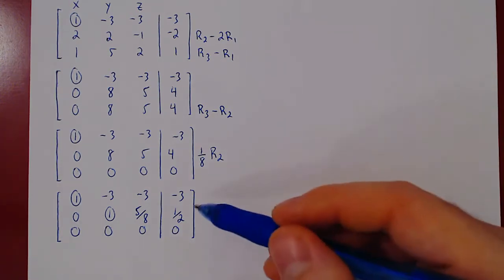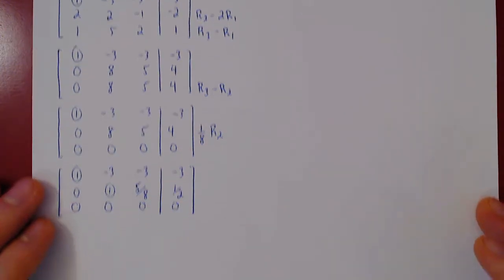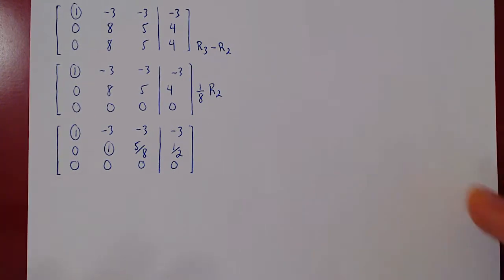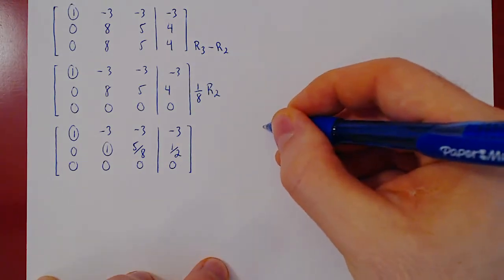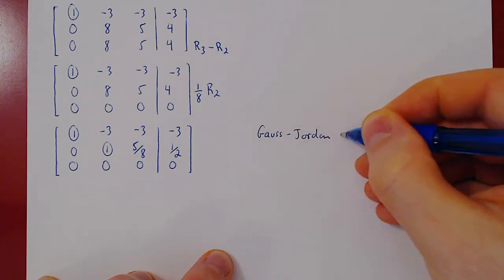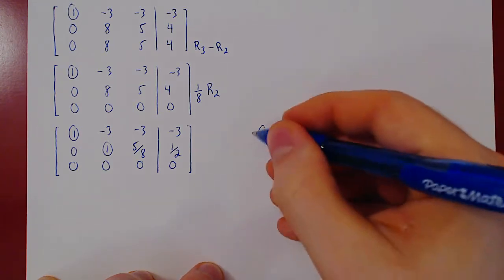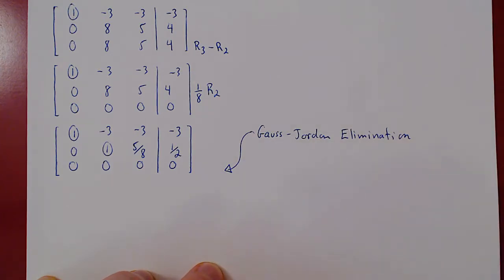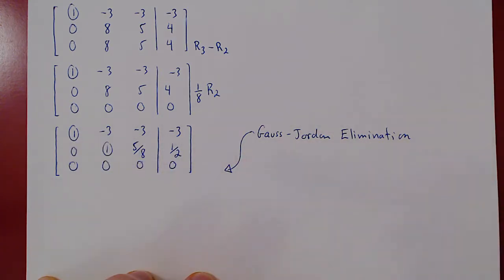As we've said in the previous video, this is the end of Gaussian elimination. This matrix is in row echelon form. And now we apply Gauss-Jordan elimination. And what is Gauss-Jordan elimination? Well, all we do is we work from the last leading one up to the first leading one, and we introduce above every leading one all zeros.